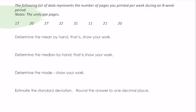Next, let's go ahead and look at problem three. So the following list of data represent the number of pages you printed per week during an eight-week period. The units are pages. So I printed 17, 20, 27, 22, 31, 11, 21, and 20. I want you to determine the mean by hand and show your work. So how do we calculate the mean?